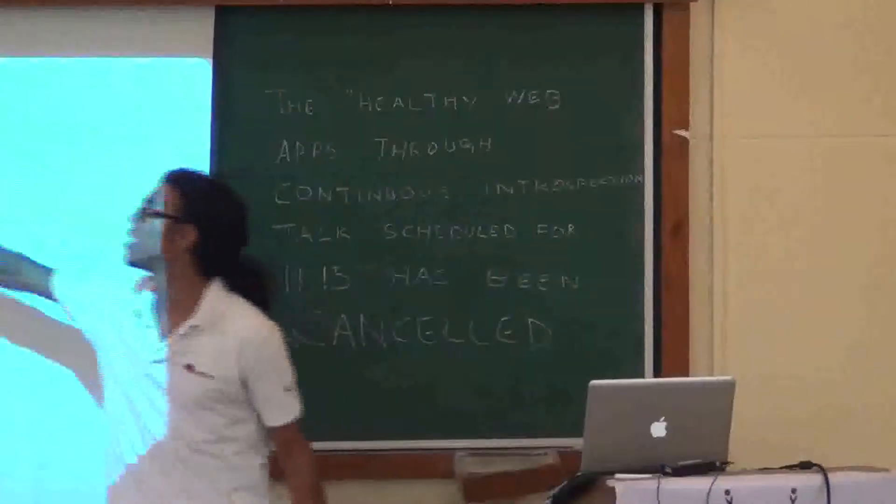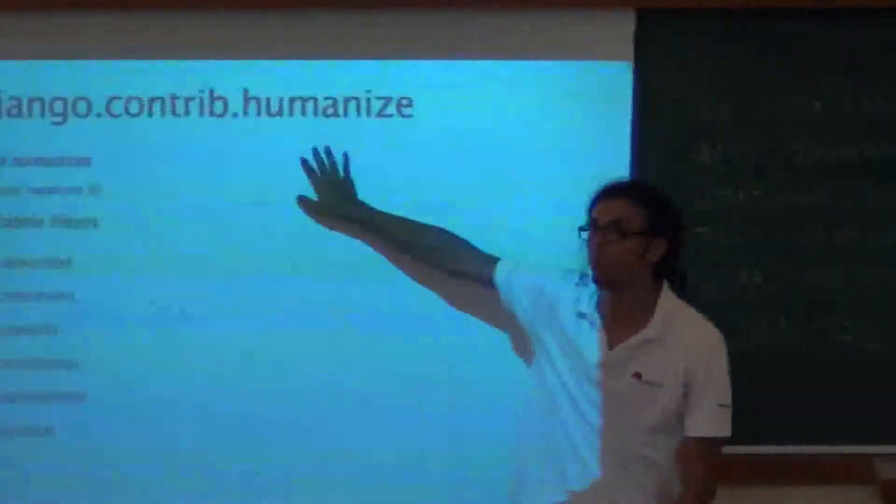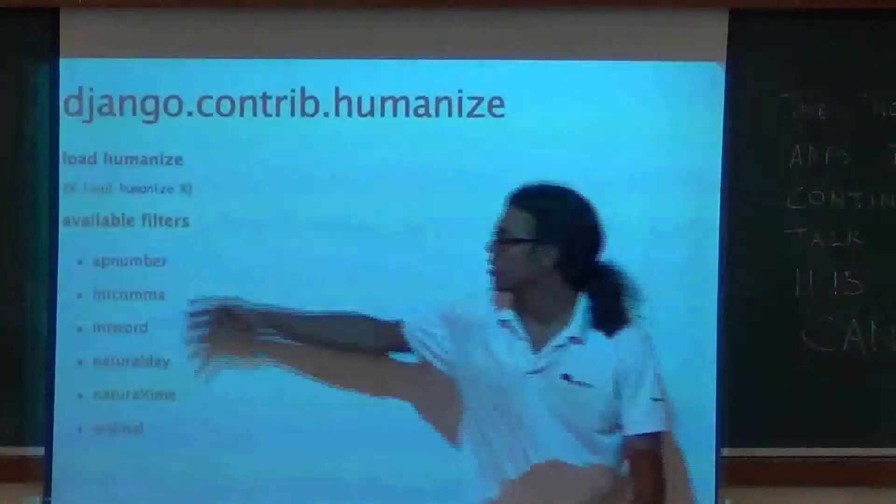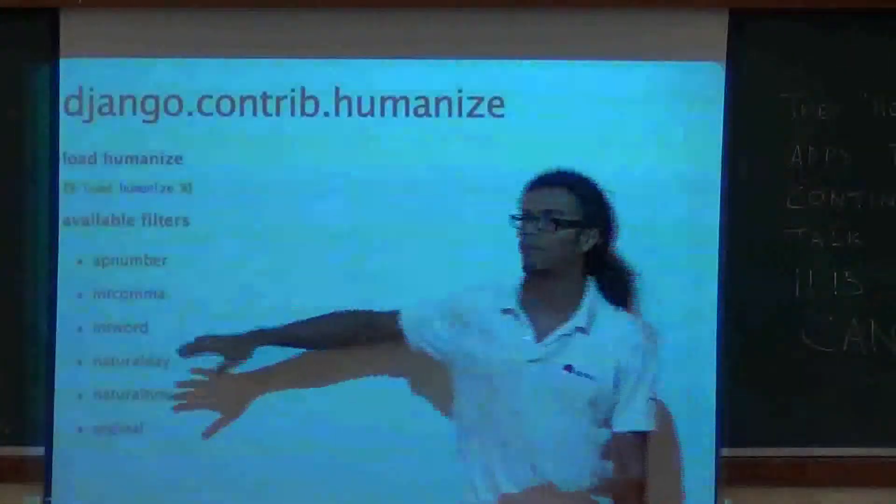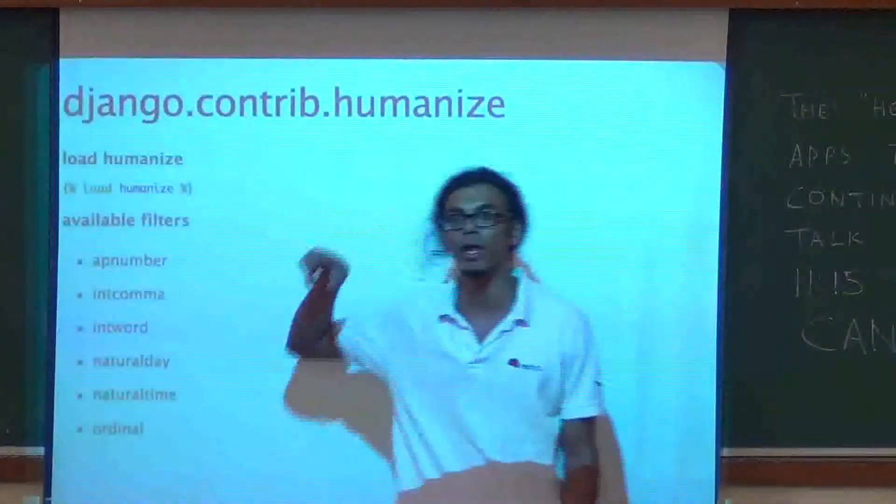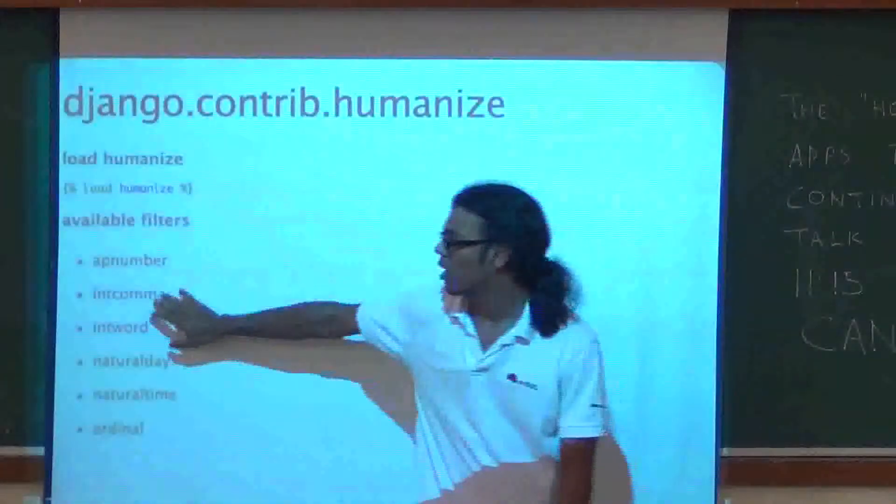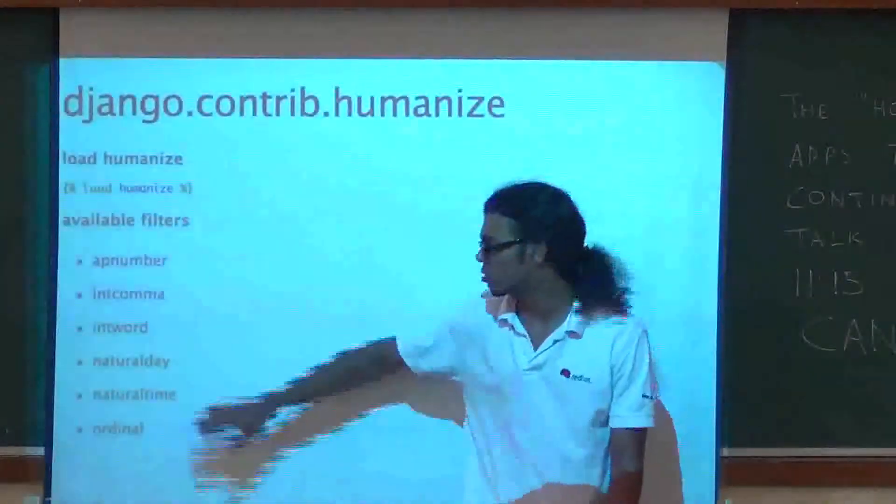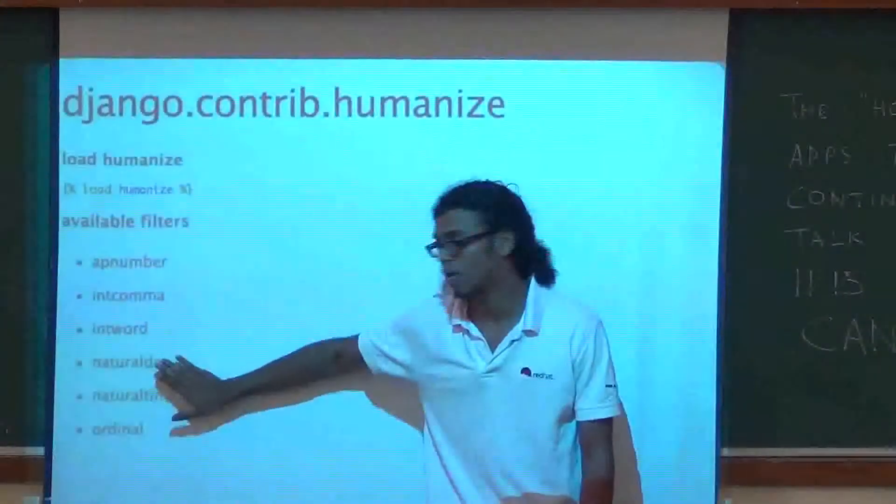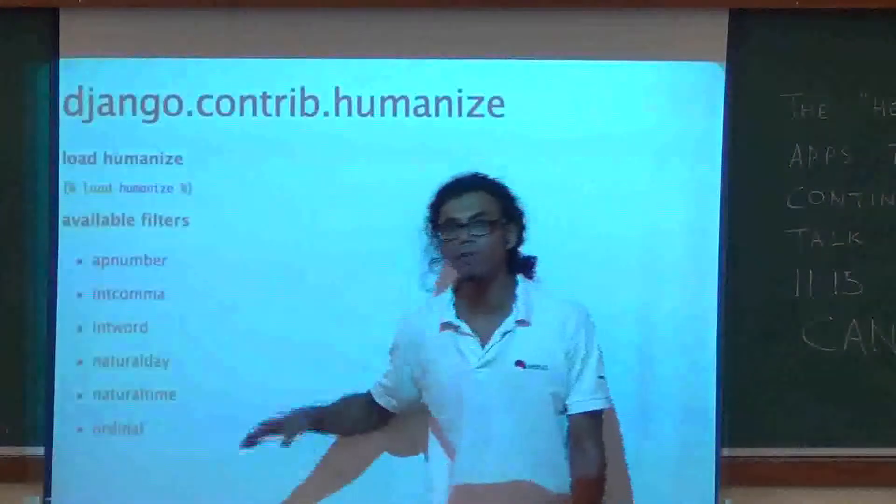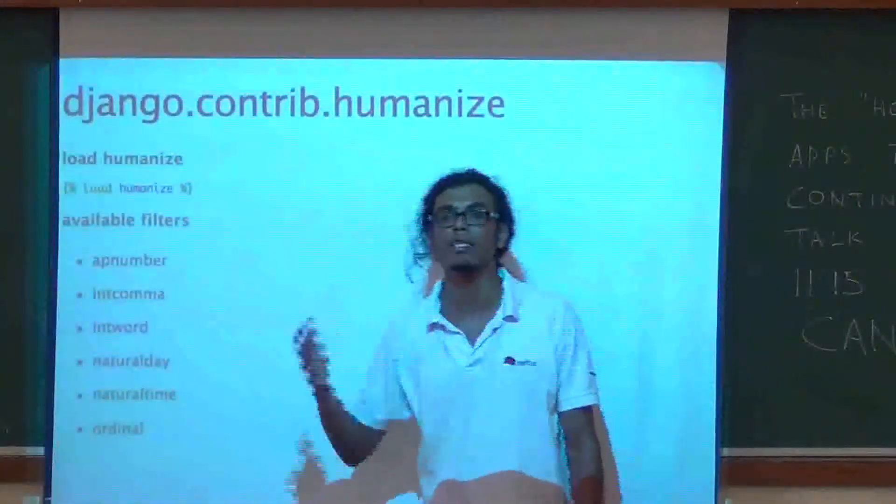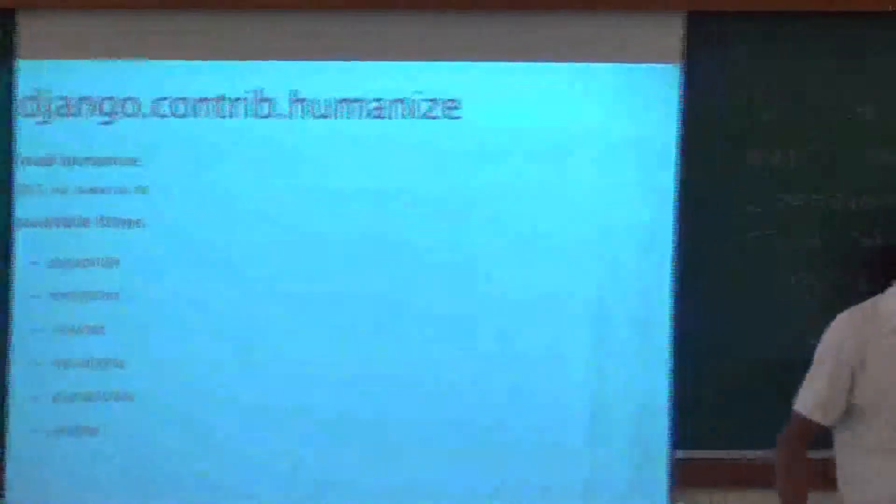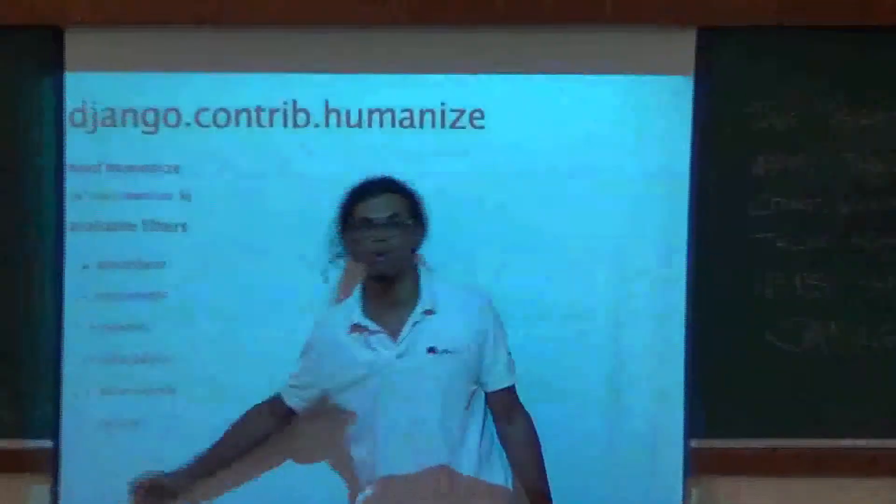So, Django Contrib has this optional package for humanize. What it does is, if you load humanize, then you will get a few more filters. App number, what it does is, if you have a figure one, it converts to ONE. It works for everything from 1 to 9. Int comma puts a comma into your integers. Int word makes your figures into words. So, if you pass a date, natural day will change your date to something like 10 days ago. Natural time will change it to a few minutes ago, like things you see on Facebook. Ordinal will take one and make first, second, third, twenty-first, twenty-third.